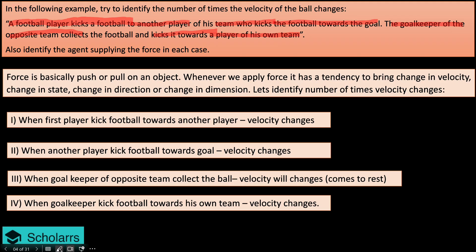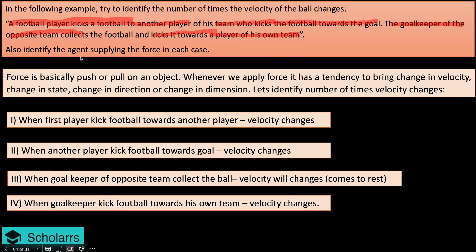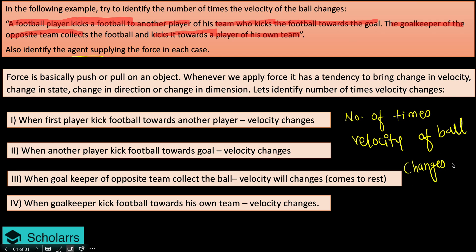So now they have asked the number of times the velocity changes. We can identify four times. So you can say the velocity of the ball changed four times. The number of times velocity of ball changes is equal to four. Overall, the velocity is changing four times. I hope you are clear with the solution. If you have any doubt, you can post in the comment section. Thank you.